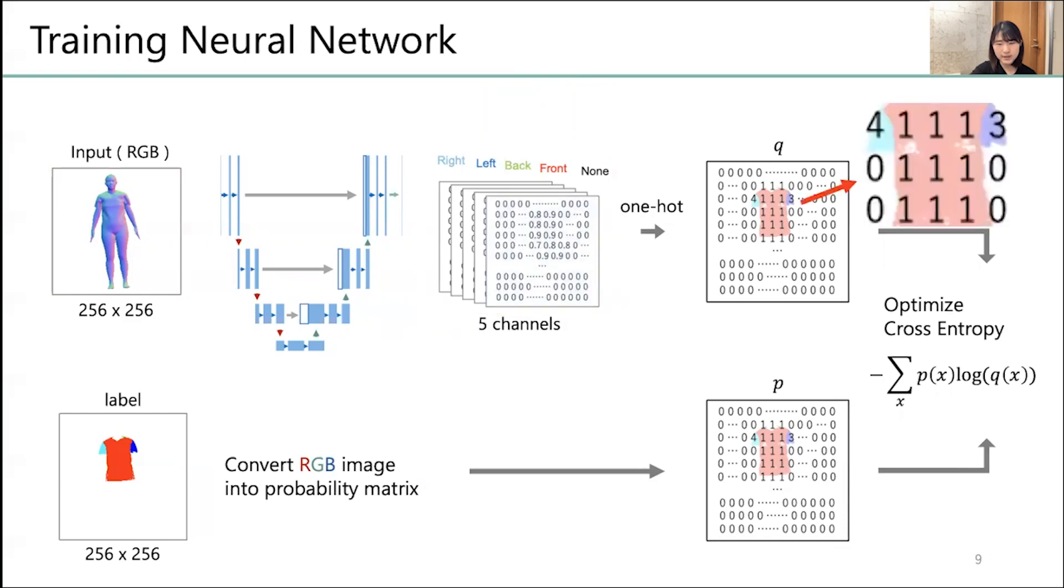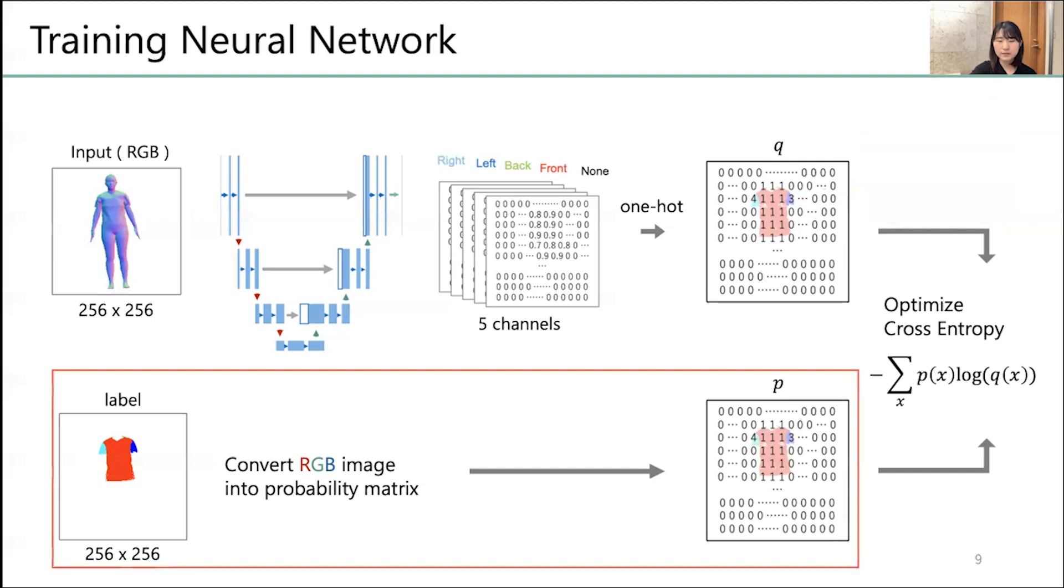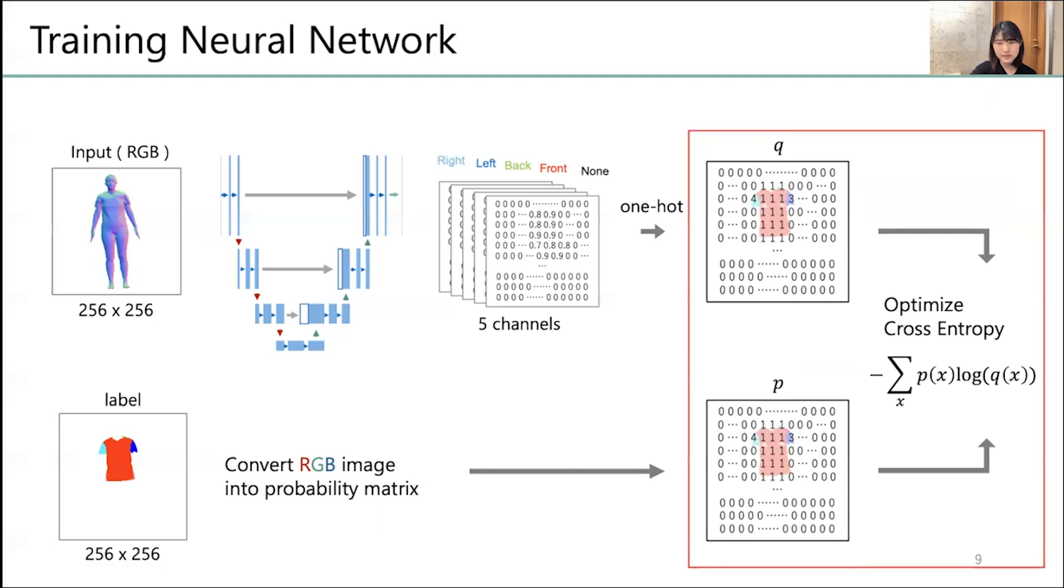To calculate the cross-entropy, the most probable pattern type of the 5 channels is picked up for each pixel and put into a single, one-hot representation. The label data is also converted to the same format, and the model is trained minimizing the cross-entropy loss between the output and the label.